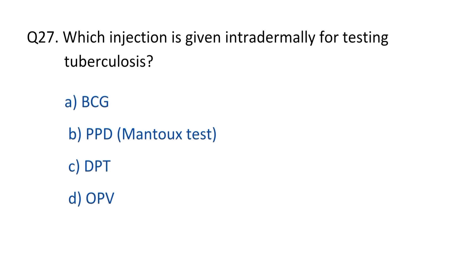Question No. 27. Which injection is given intradermally for testing tuberculosis? The right option is B, PPD Mantoux test.